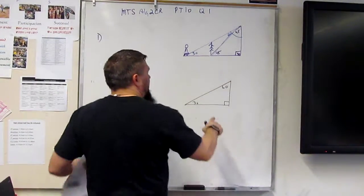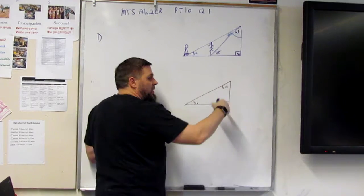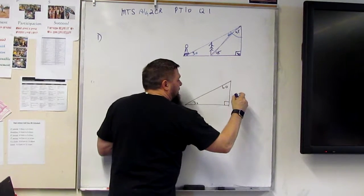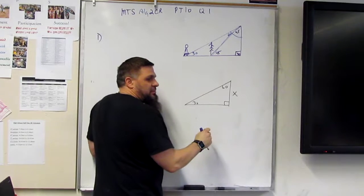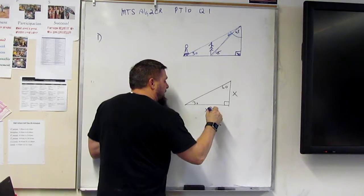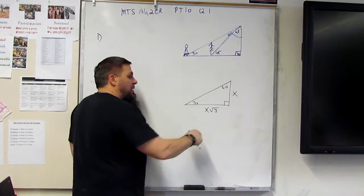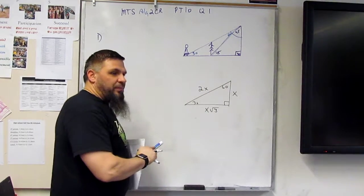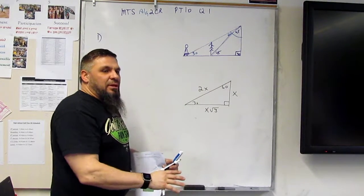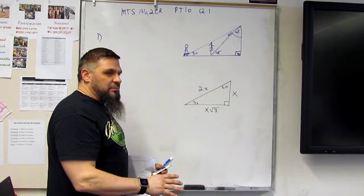So we need the 30-60-90 triangle. We need the correlation of this is what we call x, this is what we call x square root 3, and this is 2x. Okay? And that goes for every single 30-60-90 triangle.